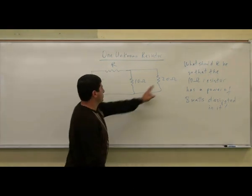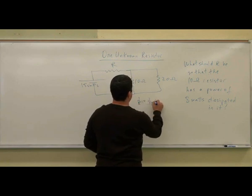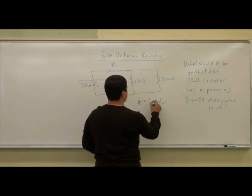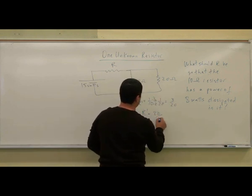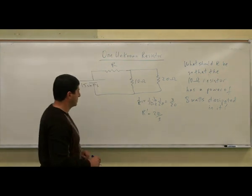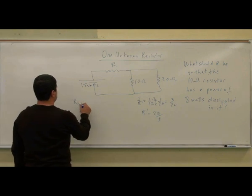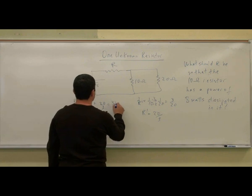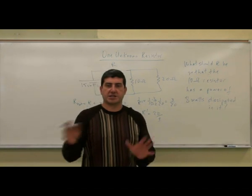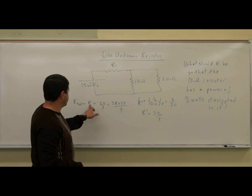So again, take the total resistance of this, 1 over R prime equals 1 over 10 plus 1 over 20. So this is going to equal 2, 3 over 20. So R prime equals 20 over 3. Okay? And then that one will be in series with this. So R total will be R plus 20 over 3, which is 3R plus 20 over 3. So I'm kind of going a little quicker now because it's similar circuit.